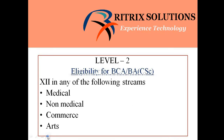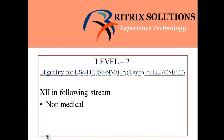Now I am going to discuss each level individually. Eligibility criteria for BCA and BA CSE: you need to have any of the following disciplines in your Plus Two — medical, non-medical, commerce, or arts. It means any student from any discipline in Plus Two can take up BCA or BA as a graduation.